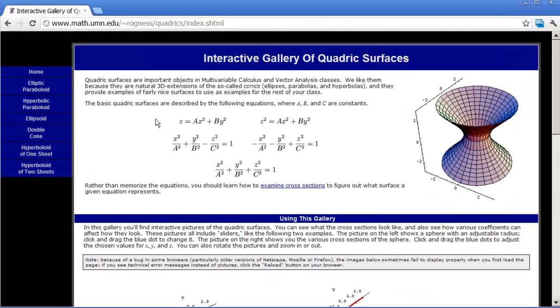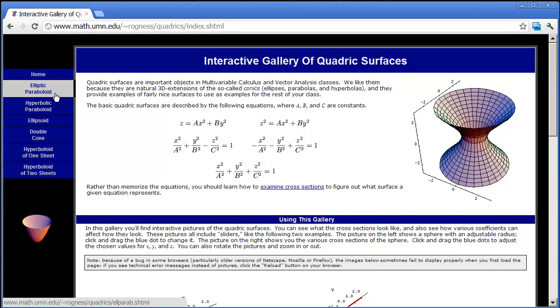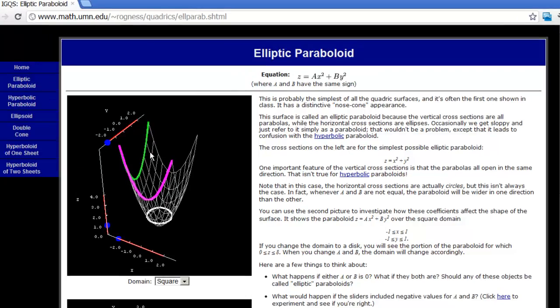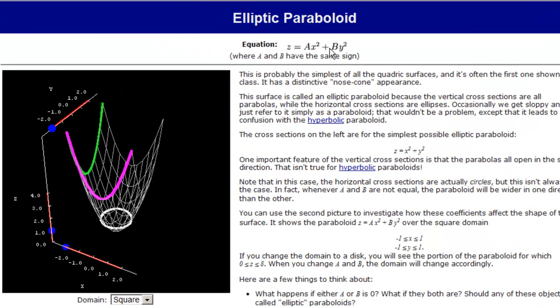So let's have a look at a couple of the different shapes, starting with an elliptic paraboloid. Okay, and we have this view here. We've got the equation up at the top. A and B have the same sides. He gives a little bit of information about them, and here's where the cross-section thing really comes into play.